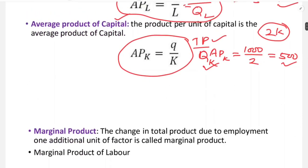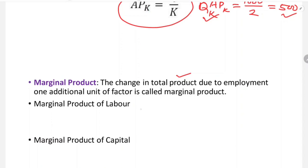The next term is marginal product. The change in total product due to employment of one additional unit of a factor is called marginal product. So, if we employ extra labor, the change in total product is the marginal product of labor. The change in total product due to one additional unit of labor is called marginal product of labor.